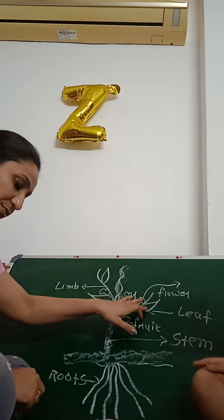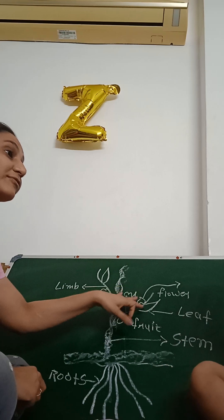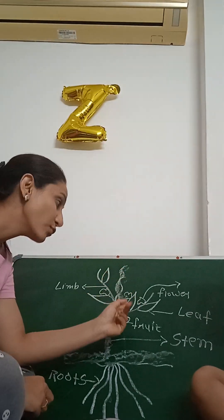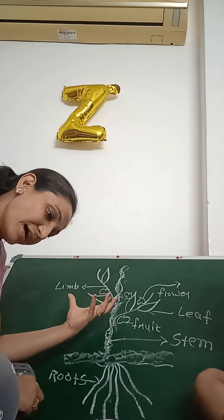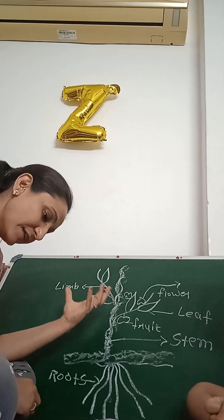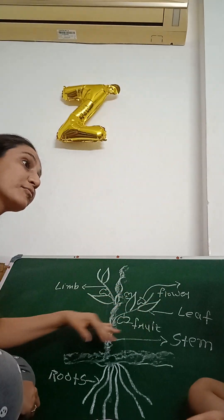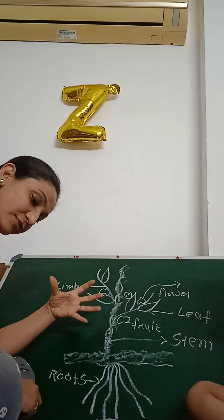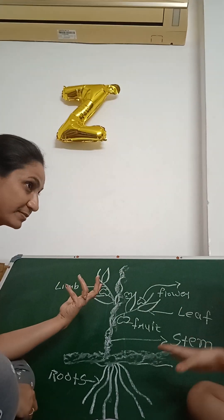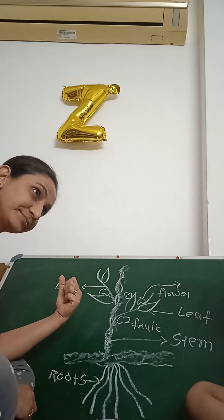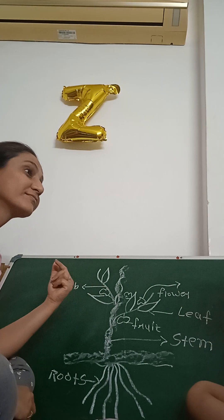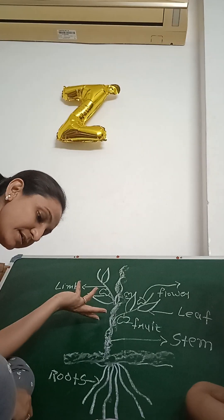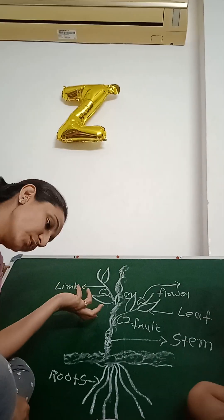Leaves make food for the plant. What are the leaves doing? They make food for our plants. And flowers are the colorful and beautiful parts of our plant. It makes the plant beautiful, and the flower produces the fruit.